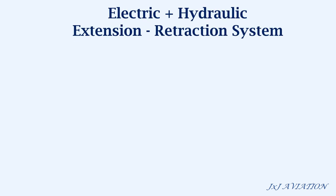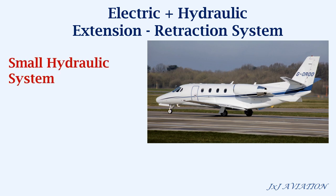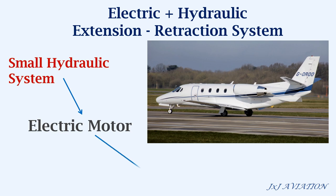Next, we will look at an electric plus hydraulic extension retraction system. This system is also found in some small aircraft. In this system, there is a small hydraulic system with an electric motor. This motor uses hydraulic pressure which is controlled by a set of valves in order to extend or retract the gears.